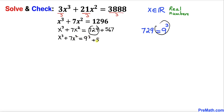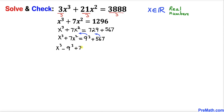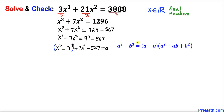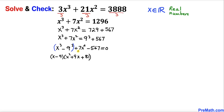Now let's move all terms to the left hand side: x³ − 9³ + 7x² − 567 = 0. We chunk the first group as (x³ − 9³) and apply the well-known difference of cubes formula a³ − b³, giving us (x − 9)(x² + 9x + 81).